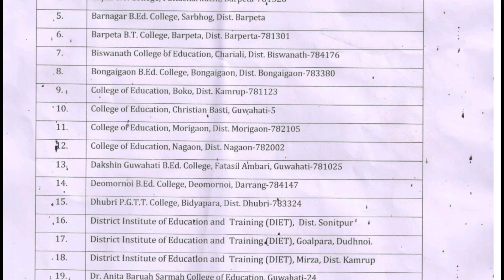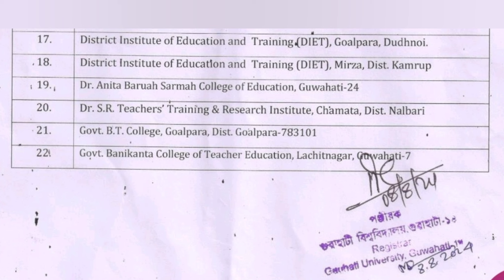We have to apply for the year and the final merit list. We apply for a single college and can apply for our student. There are a total of 38 colleges in Guwahati University, and this is the form for those 38 colleges.